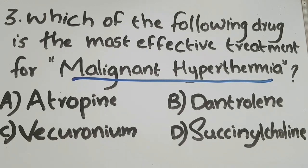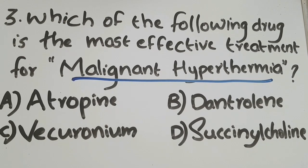Prompt treatment is essential for malignant hyperthermia to control body temperature and correct acidosis. The main drugs responsible for triggering malignant hyperthermia include certain volatile anesthetics like halothane and depolarizing muscle relaxants such as suxamethonium, decamethonium, and succinylcholine.